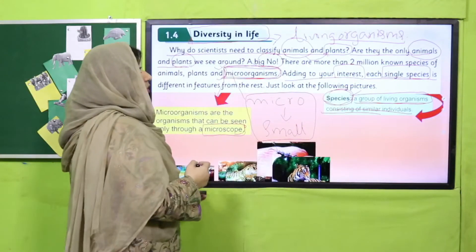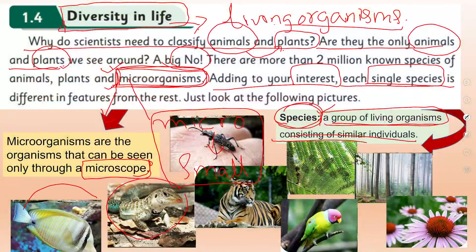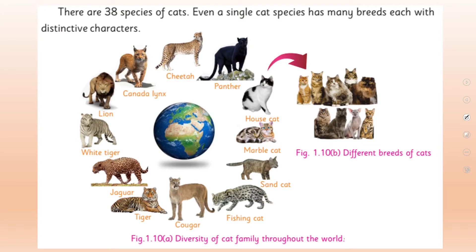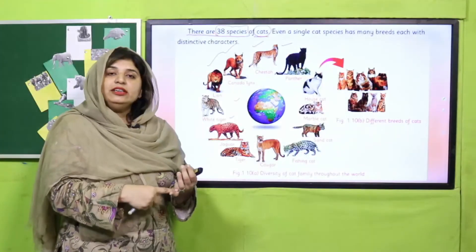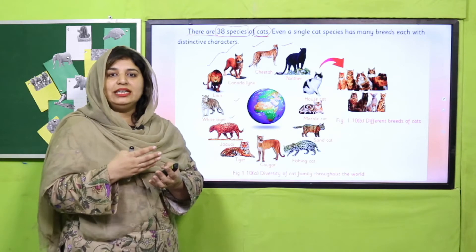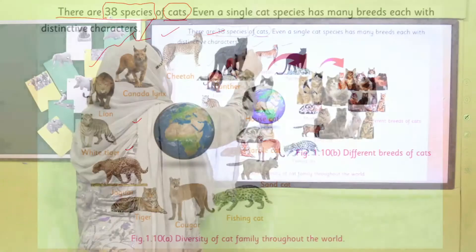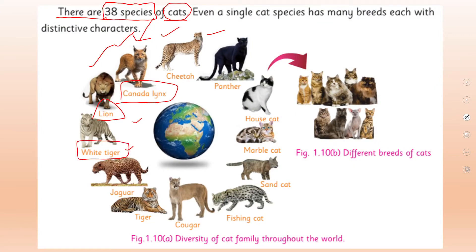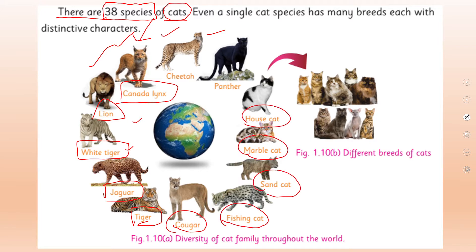Let us have a look at diversity. Look — all of these animals are different from each other, and this is what the variations or diversity in life form looks like. These are different kinds of plants and birds. There are 38 different kinds of cats or species. You might think a cat is just an animal, but tiger, lion, and many others all belong to the cat family. The cat is the main group and you have 38 different kinds of cats — lion, white tiger, jaguar — these are all different kinds of cats.